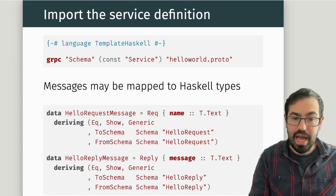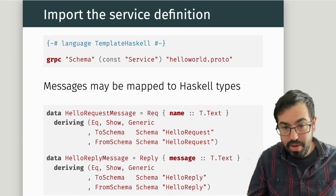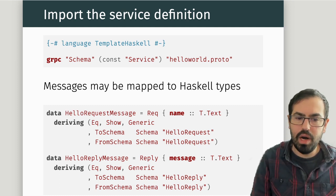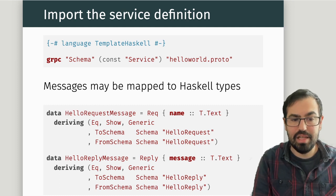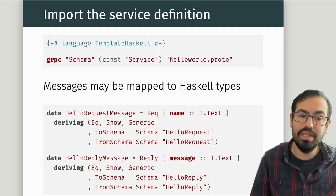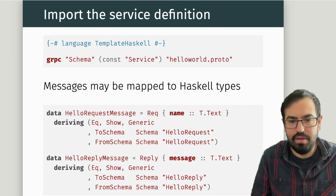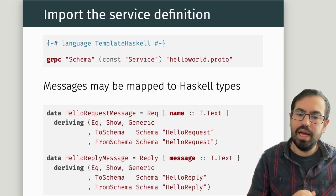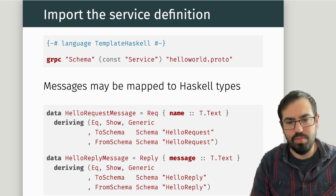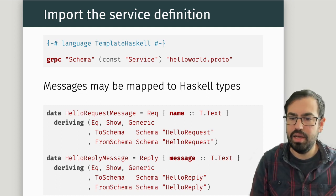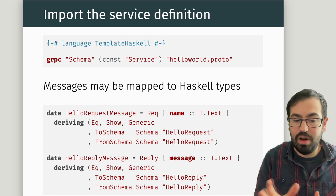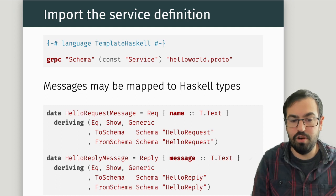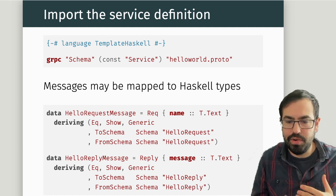The HelloRequest and HelloReply messages can be mapped to Haskell types. You define these types by hand at this point, and then derive ToSchema and FromSchema, which allow you to serialize and deserialize from the schema. Here we're taking a different approach from Servant: there is one single kind of ToSchema and FromSchema, and we'll look at this serialization difference later.